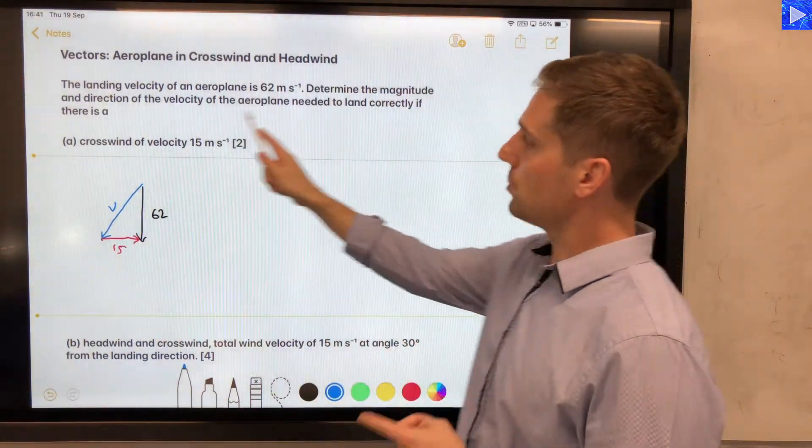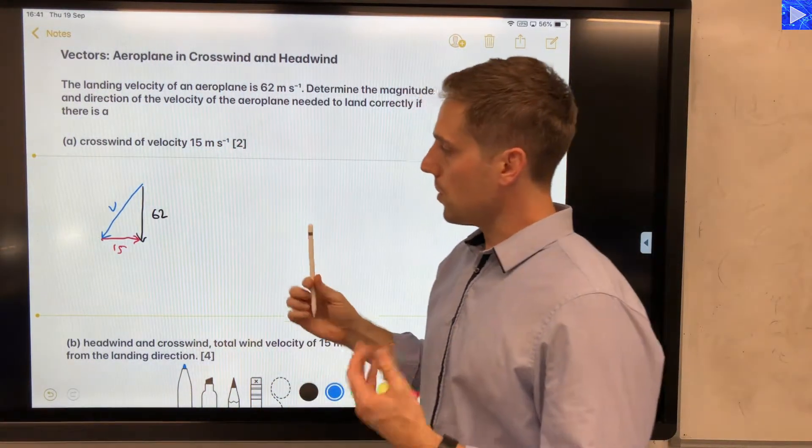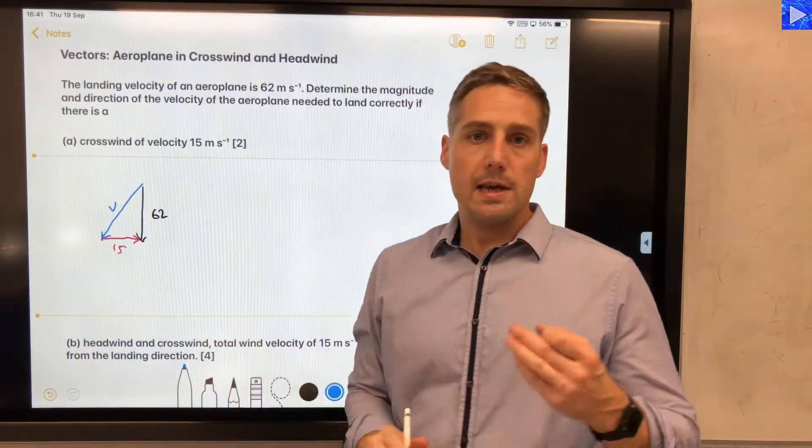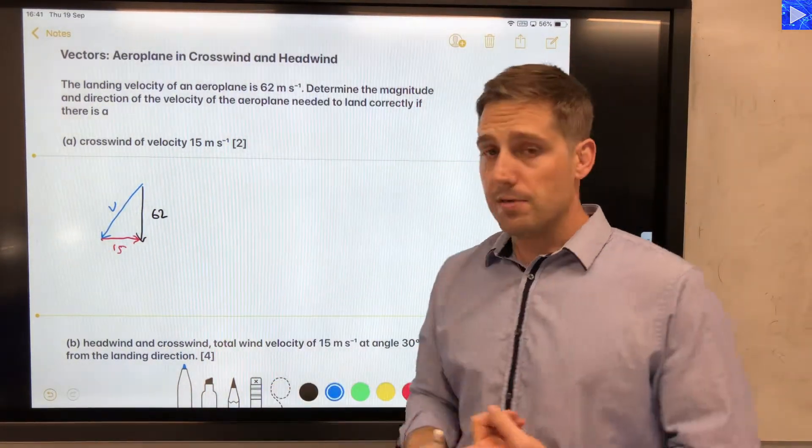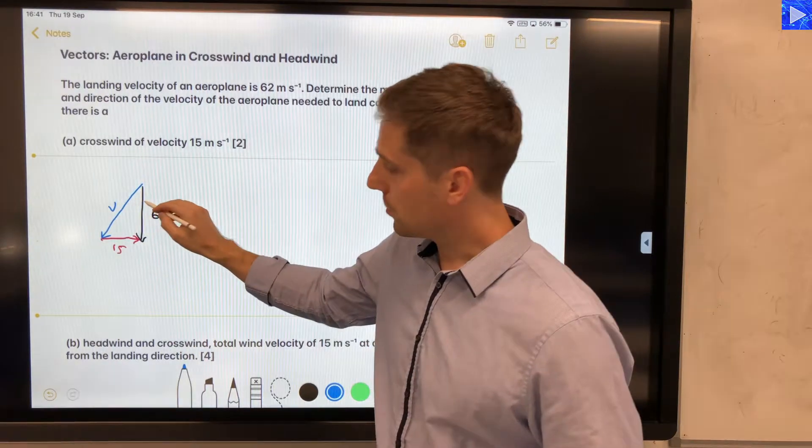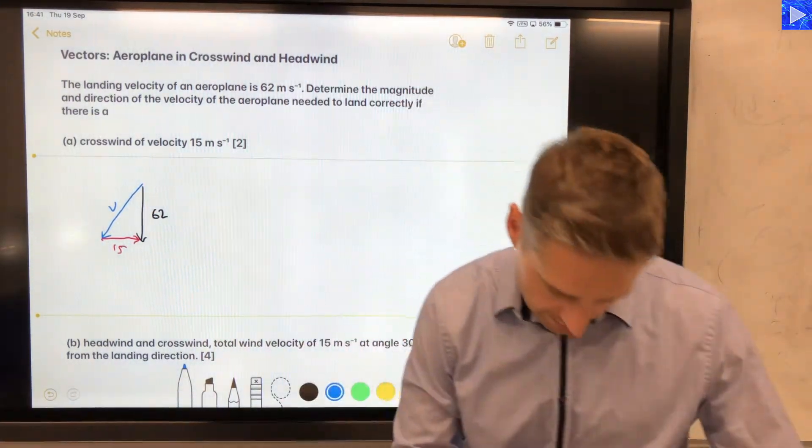Now I need to determine the magnitude and direction. So I need to work out how big this is. It's the hypotenuse of the triangle, so that'll be a Pythagoras problem, and then we're going to use trigonometry to work out the angle. So let's get stuck into that.